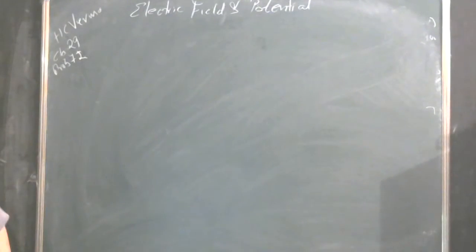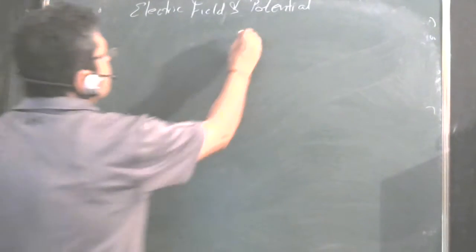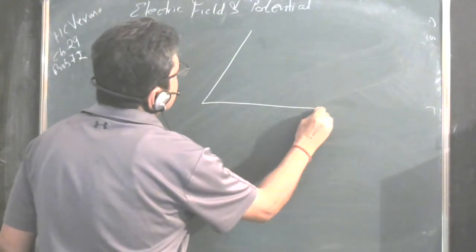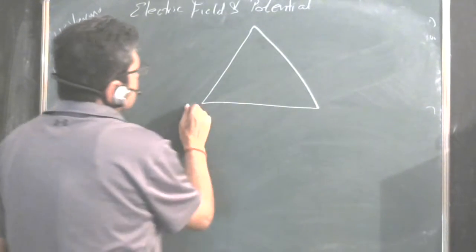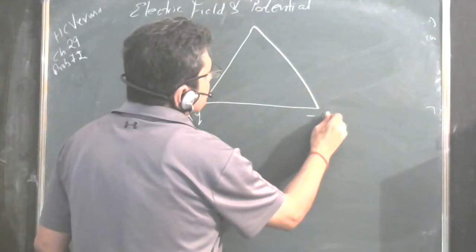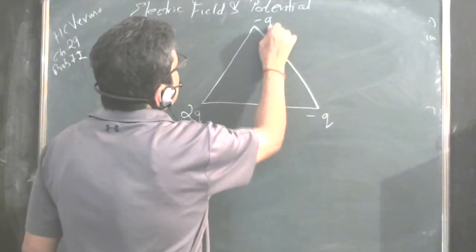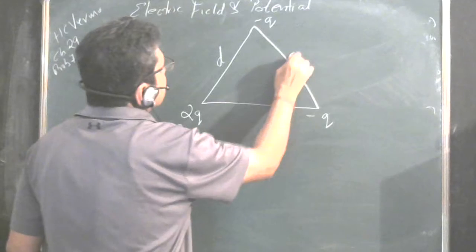In this, we are given an arrangement like this. There is an equilateral triangle. Twice Q charge is here, minus Q is here, minus Q is here, and these distances are D.